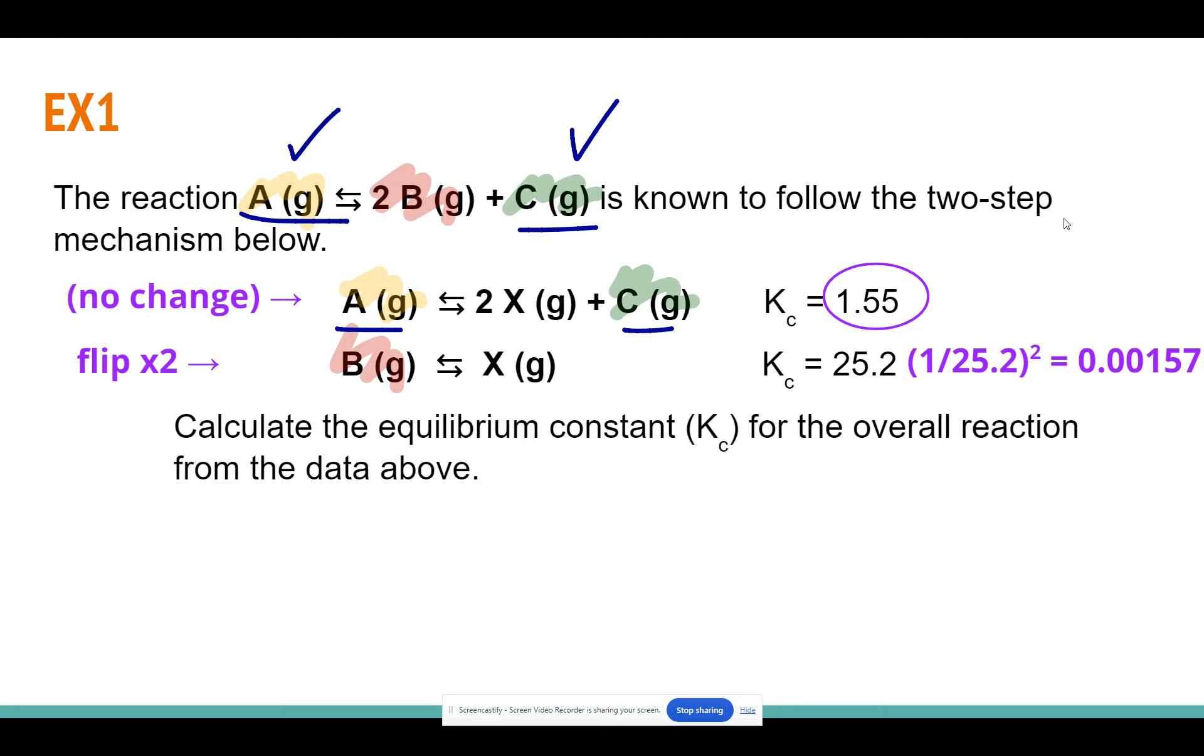And, you know, take a second to double-check that in your calculator to see that it does turn out to be the same value. But we've now flipped and multiplied by 2. So that means that we are getting our 2B on the product side.